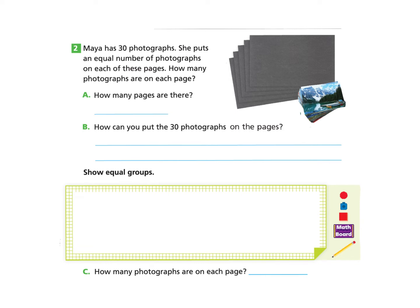Part 2. Maya has 30 photographs. She puts an equal number of photographs on each of these pages. How many photographs are on each page? Our first step is to answer how many pages are there. And you can go ahead and count the amount of pages. If you need to pause, you may. And you will find that there are five pages. So we can write that in.